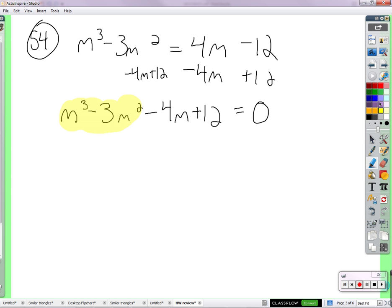There's a group. Very good. And there's another group. Each group, we find what they have in common. These two have m squared in common. So m squared times (m minus 3).